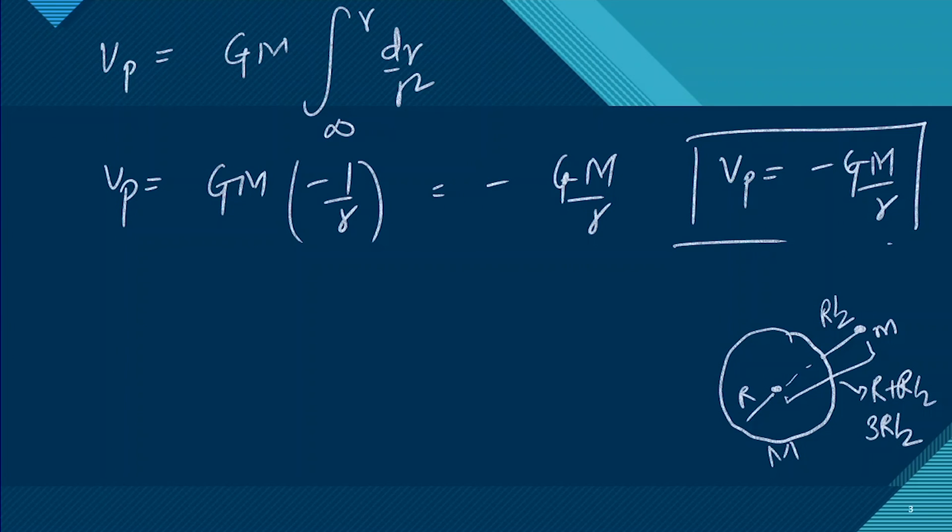We have to find out the work, the amount of energy, which equals the integral of F dx. Our limits will be, we have to send it from the surface of the Earth, so from R to 3R/2.